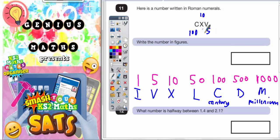So CXV, if you put it all together, you've basically got 100 plus 10 plus 5. And 100 plus 10 plus 5 is 115. So the answer we're looking for is 115.